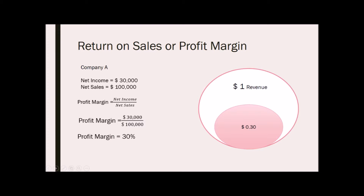Generally, the higher the return on sales is, the better, and any changes in net profit margin will be endlessly scrutinized. In general, when a company's net profit margin is declining over time, a myriad of problems could be to blame, ranging from decreasing sales to poor customer experience to inadequate expense management.